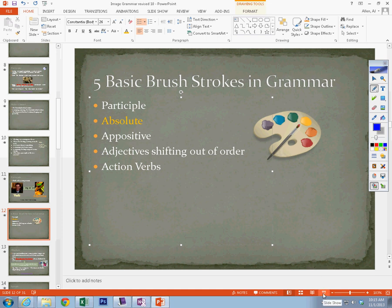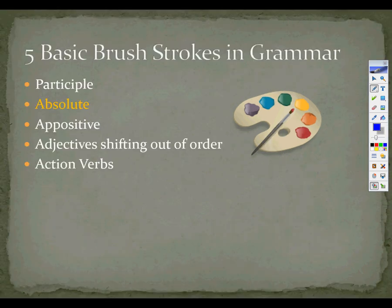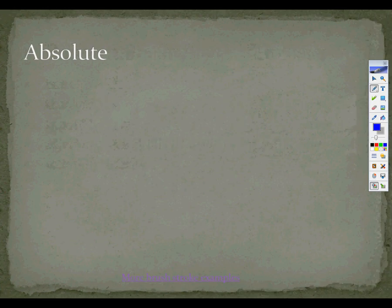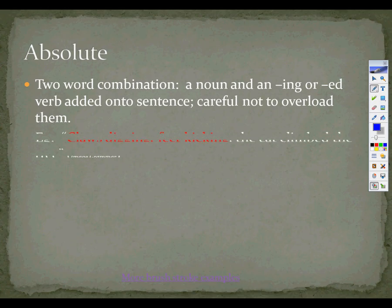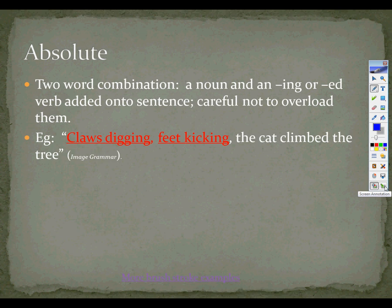Let's talk about another brushstroke: absolute. Remember, we pair absolute and participle together in these lessons because an absolute is very similar to participles. An absolute is a two-word combination — noun and participle. Think of it as kind of a package deal.